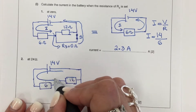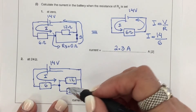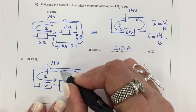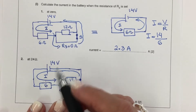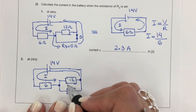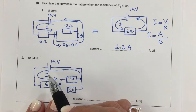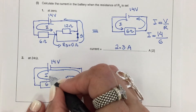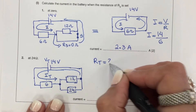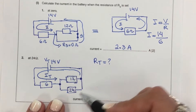Here the current is going to split between both resistors. At this junction the current splits, and at the second junction it recombines. The current recombines to form the original current — the current flowing from the battery — which we call the total current. I need to find the total resistance, or equivalent resistance, which is the single resistance value that replaces all resistors in the circuit.